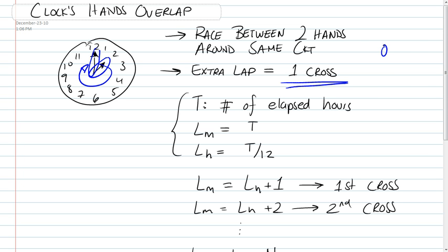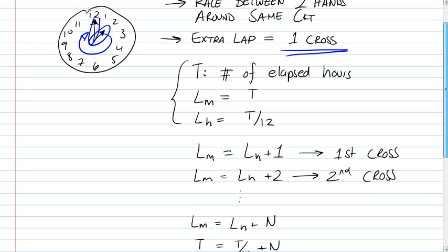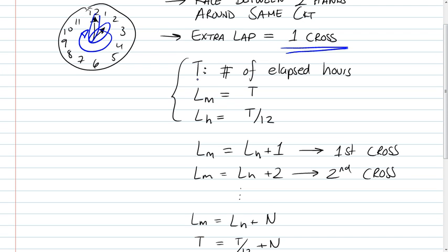So if one runner actually made the lap two times more than the other, then this means that he has actually crossed the other runner twice. So if you look at it this way, the problem actually simplifies greatly and we're going to solve it this way.